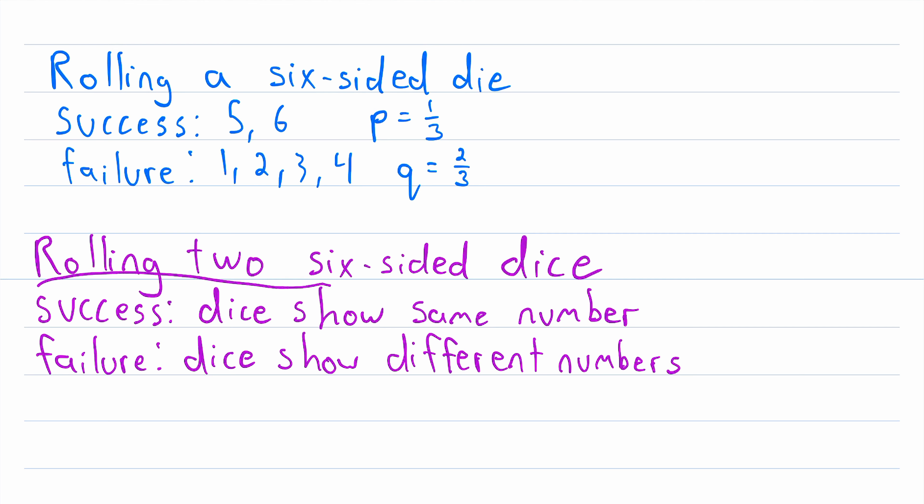So in this trial, what's the probability of success? Well, there are six total ways that two dice can show the same number. They can both be one, two, three, four, five, or six. And there are 36 total possibilities when you roll two dice. So since they're all equally likely, the probability of success is six divided by 36, which is just equal to one over six.